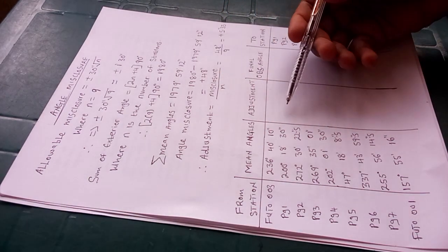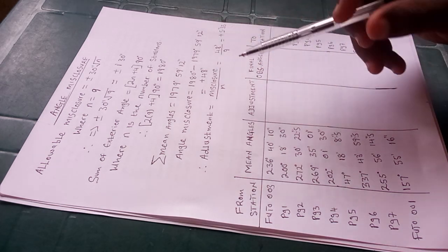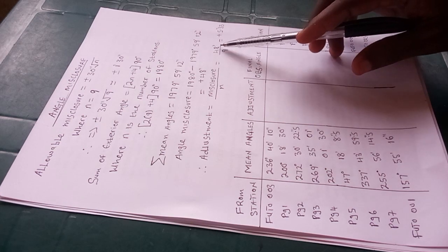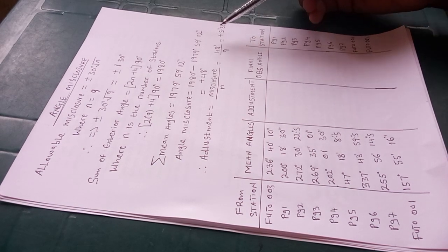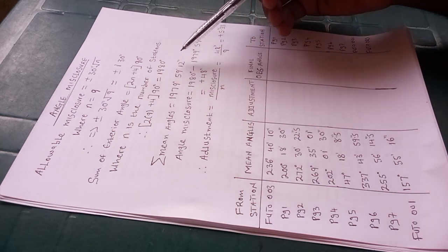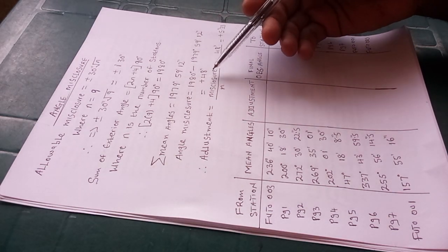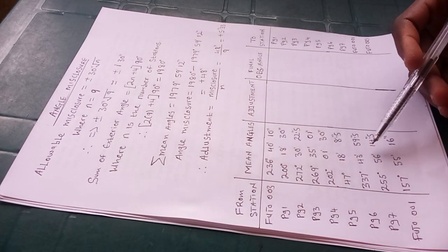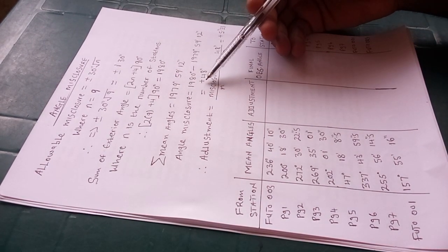Since the error is allowable, we can spread this error across the stations. The quantity we spread across each station is called the adjustment, and it is calculated as the misclosure divided by n — total number of stations. So 48 seconds divided by nine gives 5.33 seconds. It is positive because what we have is less than what we expected, meaning our summation is short by 48 seconds, so we add it. If your sum were bigger than expected, the sign would be negative.